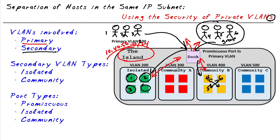In this example we have VLAN 200, 300, 400, and 500 as secondary VLANs. Not all secondary VLANs are created equal — there are two types: isolated and community. In an isolated VLAN — and you're only going to have at most one — any ports participating in that isolated VLAN, in this case VLAN 200, will not be able to communicate with any other ports in the private VLAN, with the exception of a promiscuous port which we'll discuss in just a moment.